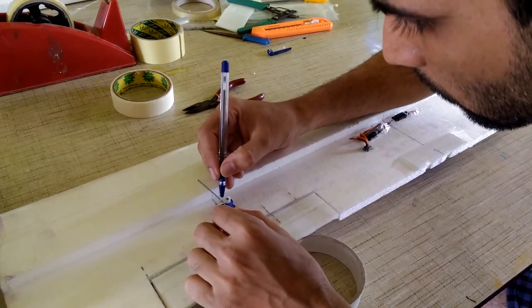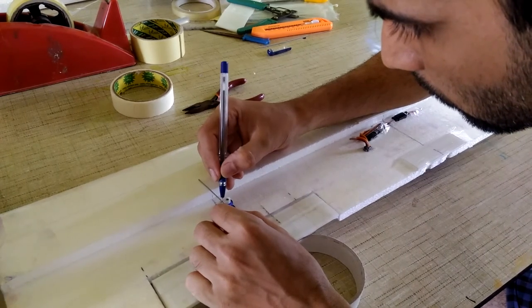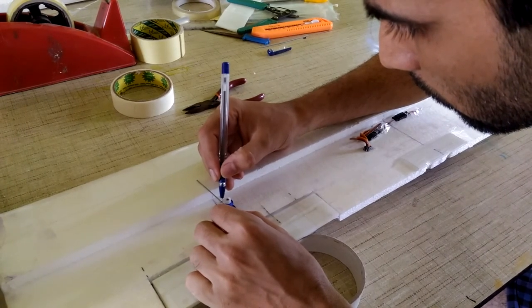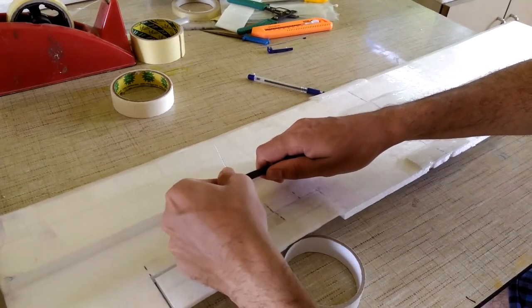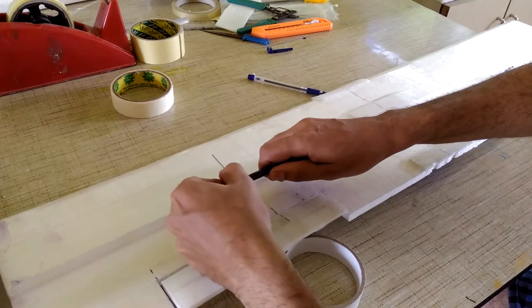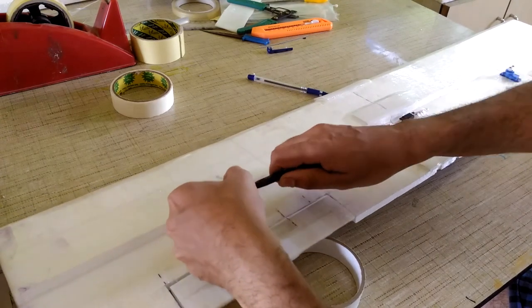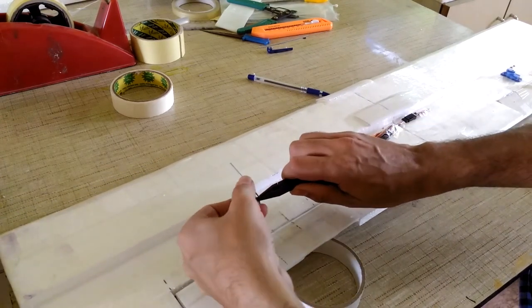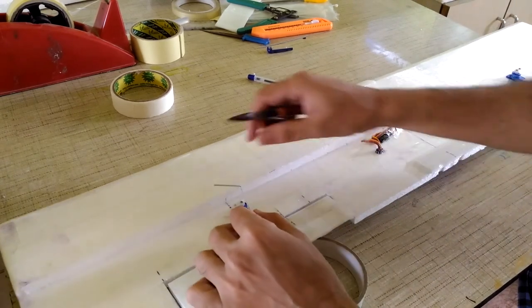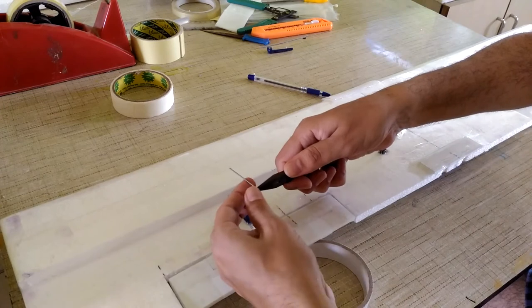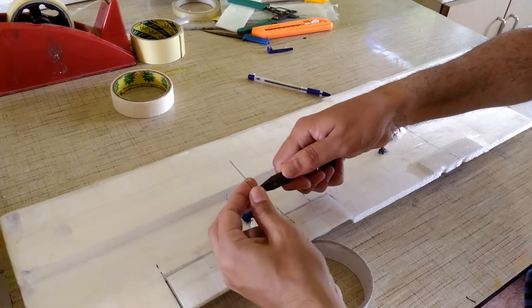Making sure that the aileron is in the neutral position and then marking the wire where to have the Z bend and bending it over, and creating a Z bend at the servo arm side. This portion is a bit tricky so don't rush on that.